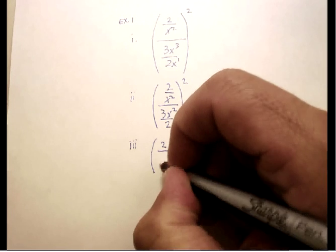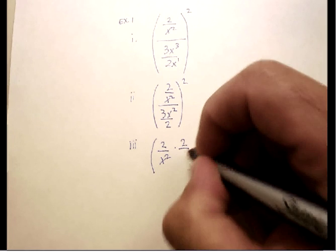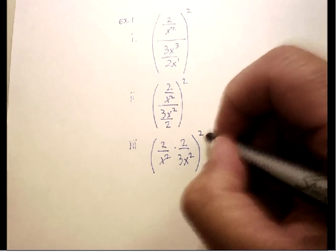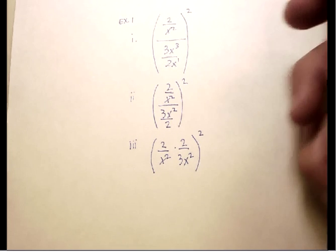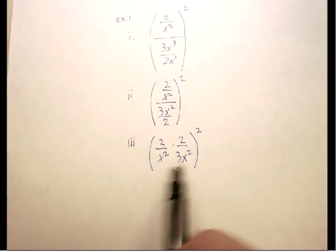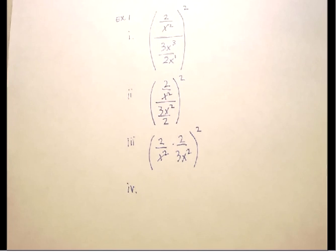I'm going to write 2 over x squared times 2 over 3x squared. I just took this, flipped it up, and multiplied it. Now that actually helps because I can do some work up here. Let me show you what I can do.